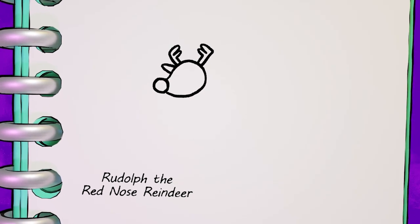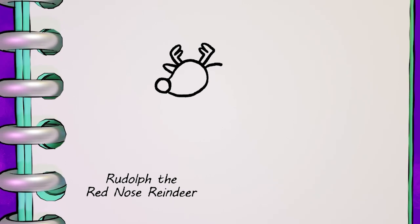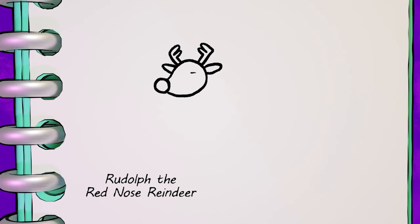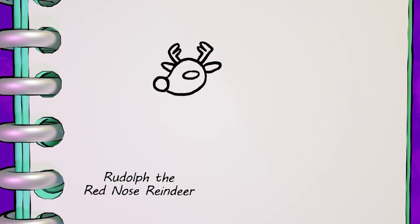Then we'll draw his other ear with a nice small curve, then an oval in the middle of his head for an eye. We'll fill in the eye with a pupil, and that's his head done.